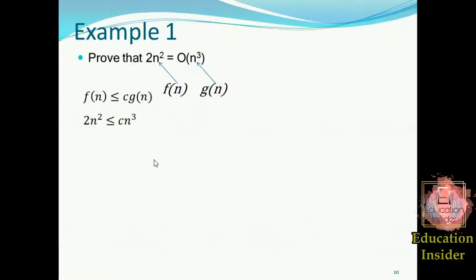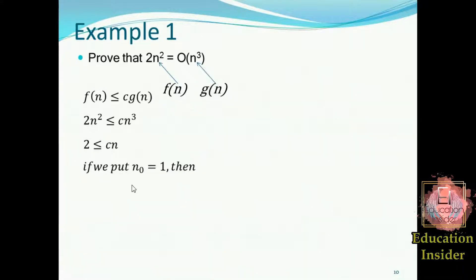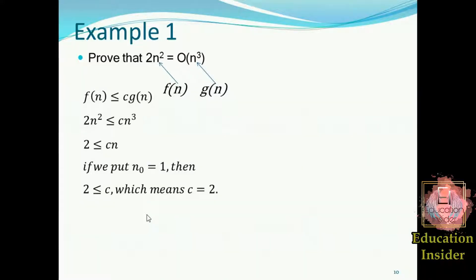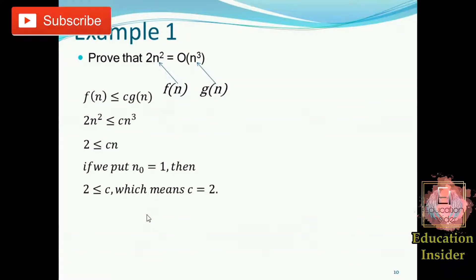Now let's do some algebra and cancel out n by dividing n² on both sides. What we need to find are the values of c and n₀. n₀ is the minimum value of n and cannot be 0 — it must be greater than 0. If I assume the value of n as 1, I get the value of c as 2. So we get the values of c and n₀, and hence we showed that n³ is an upper bound of 2n².